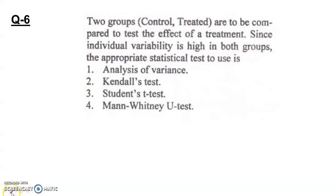In the case of two groups — controls and treated — to be compared to test the effect of a treatment, and since individual variability is high in both groups, the appropriate statistical test to use is the Mann-Whitney U test. Options include ANOVA, Kruskal-Wallis test, Student T-test, and Mann-Whitney U test. The most appropriate answer is the Mann-Whitney U test because it is a non-parametric test. So option 4 is the correct answer.